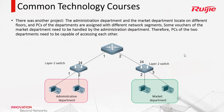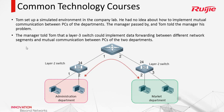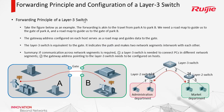Our engineer Tom received a new project. The company requires him to make the administration department communicate with another market department. They are in different VLANs and these two switches are layer 2 switches. So how to implement this function? Tom asked the manager and the manager told him a layer 3 switch could implement this function, so this switch should be a layer 3 switch. But how does the layer 3 switch make different VLANs communicate with each other?